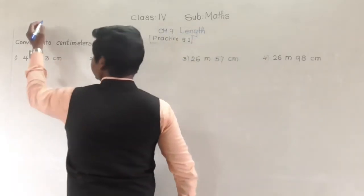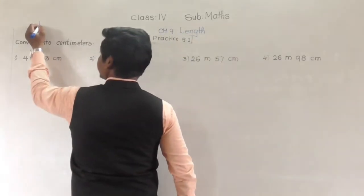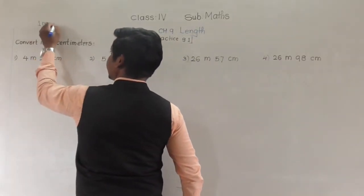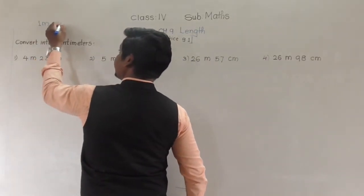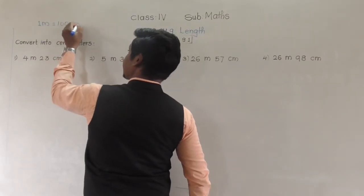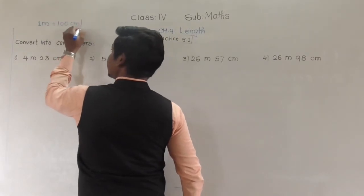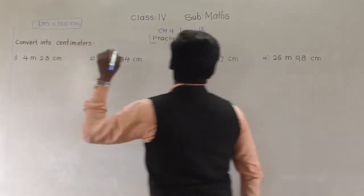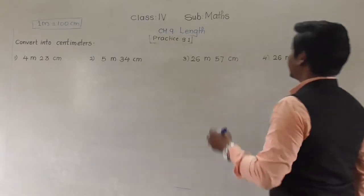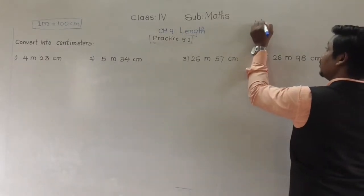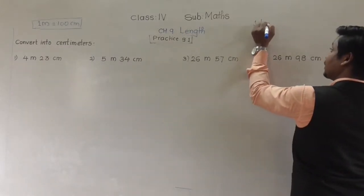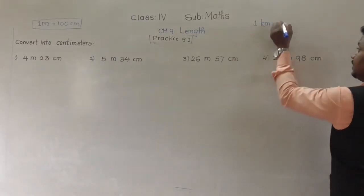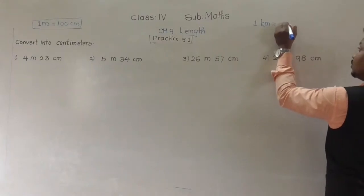Keep these things in mind: one meter equals one hundred centimeters, and one kilometer equals one thousand meters.